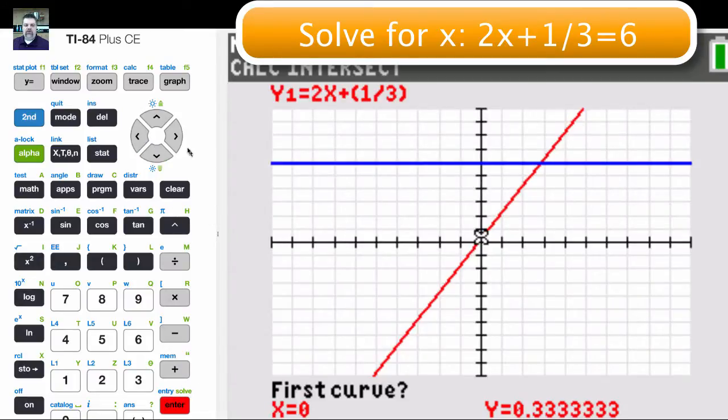and then move your cursor to where the two lines intersect. I want to point a couple things out. Notice that we are on the red line. The equation for the red line is right here. When we're pretty close, or as close as we can get, hit enter.